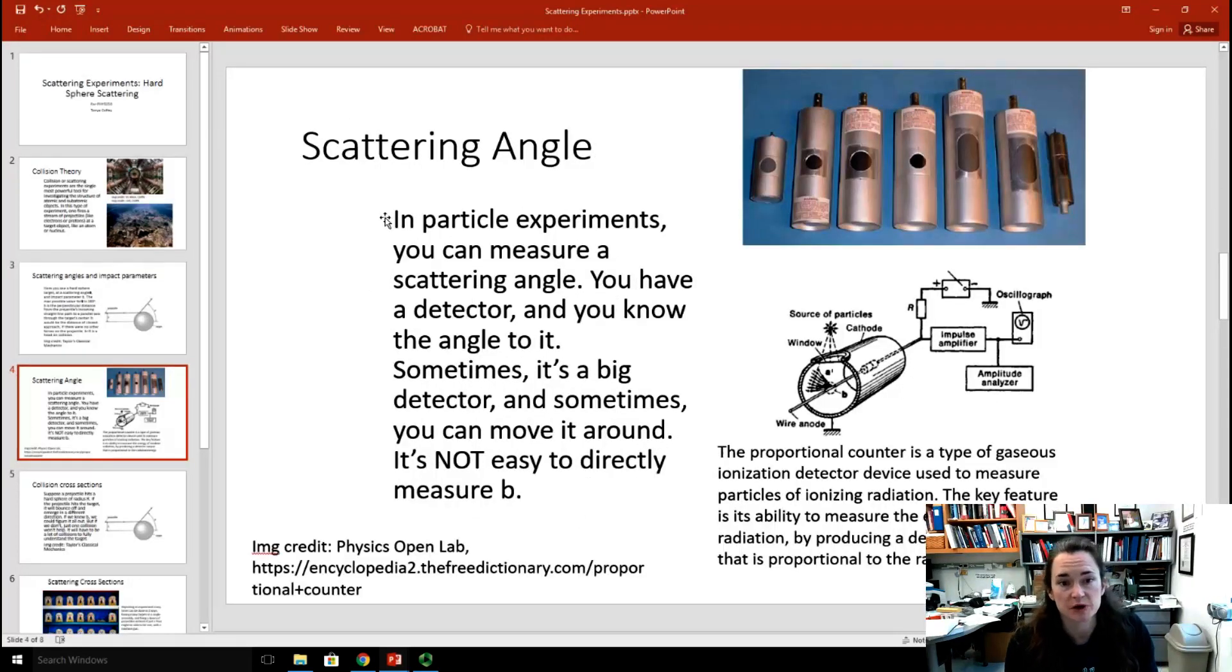In particle experiments, what you do is you measure a scattering angle. You have some kind of detector, and you know what the angle is to that detector from where your target is. Sometimes it's a big detector, and sometimes you can move the detector around. This is the kind of thing that you can measure, but it's really not easy to measure the impact parameter. That would mean that you had to measure the thing before it even touched your target, which would be kind of hard.